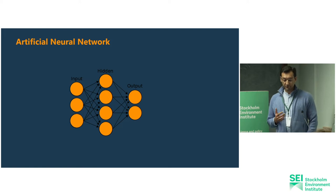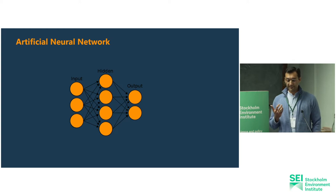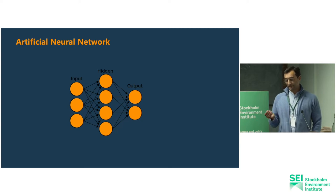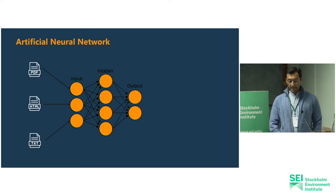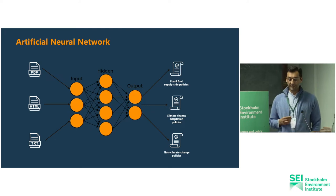We developed an artificial neural network model able to classify textual passages pertaining to fossil fuel supply-side policies. What we want to achieve is for the neural network to automatically distinguish supply-side policies from similar but distinct text categories such as climate change adaptation policies, which are usually found within the same relevant text corpora such as government databases. The model receives text as input and produces a label classifying input as either fossil fuel supply-side, climate change adaptation, or non-climate change-related policies with a certain probability.